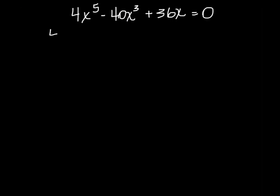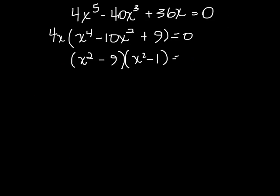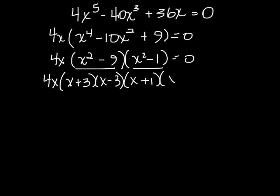So in this example I'm going to factor out a 4x which will leave me x to the 4th minus 10x squared minus 9. Okay this inside will factor as x squared minus 9 and x squared minus 1 equals 0. You'll notice that this is the difference of squares, so is this. I'm looking for 5 solutions. This solution 4x equals 0 divide by 4. This is going to be x equals negative 3, x equals 3, x equals negative 1, x equals 1.